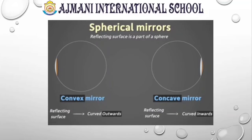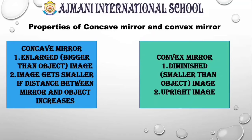In spherical mirrors, because the convex is bent outwards and the concave is bent inwards, they perform different properties. Concave mirrors produce enlarged image formation. But in a convex mirror, the images are diminished — meaning they are smaller than the object. In concave mirrors, the image gets smaller as the distance of the object keeps on increasing. In a convex mirror, it depends on the situation — whether the distance is increasing or decreasing gives different results. The image formed by a convex mirror is always an upright image, but in a concave mirror it may differ as per the situation.